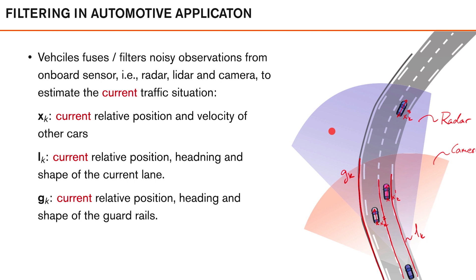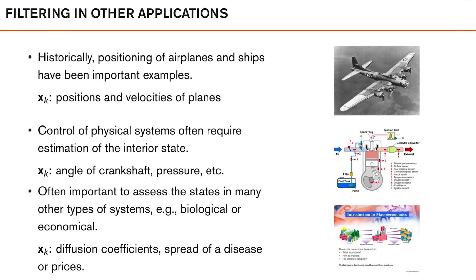We want to use as much data as possible without introducing any lag. Filtering is also used in many other domains. One of the first applications was finding the position and velocity of airplanes and ships for military purposes, which is still active today. Within control of physical systems, filtering techniques are used to estimate interior states — for example, estimating the crankshaft angle or piston pressure to control fuel injection in an engine. It is also common to use filtering to estimate quantities that cannot be measured directly.